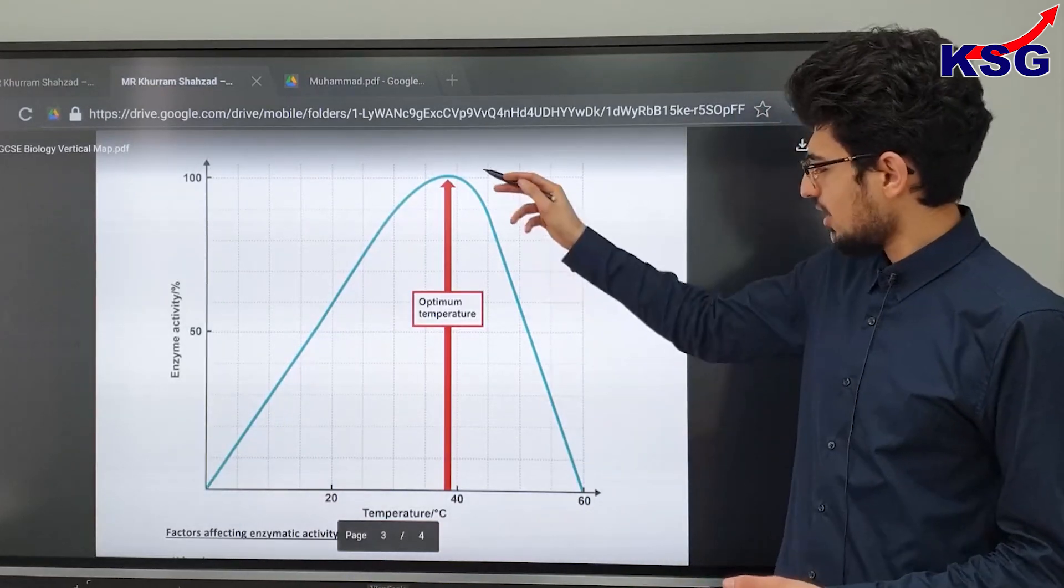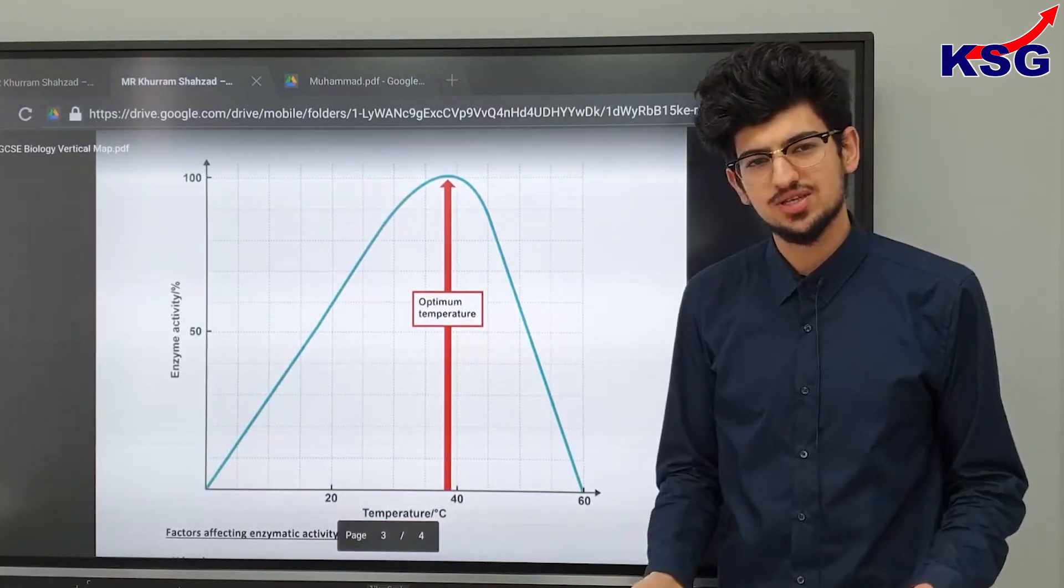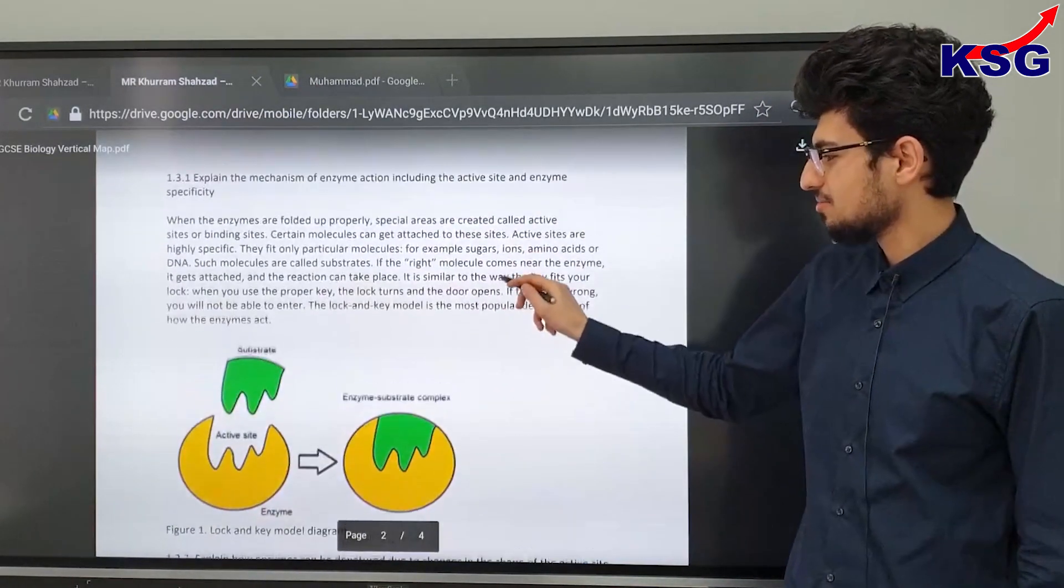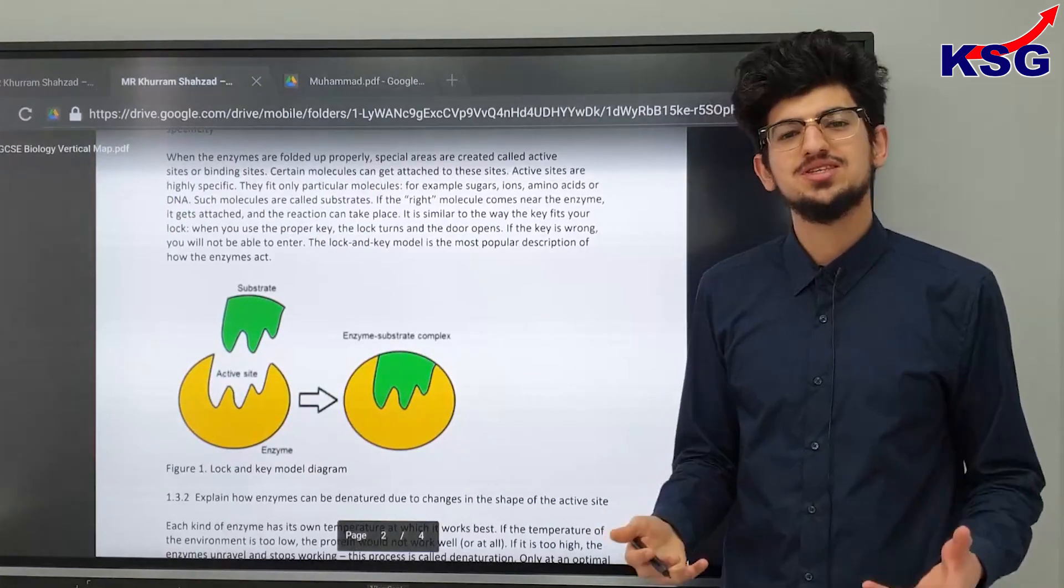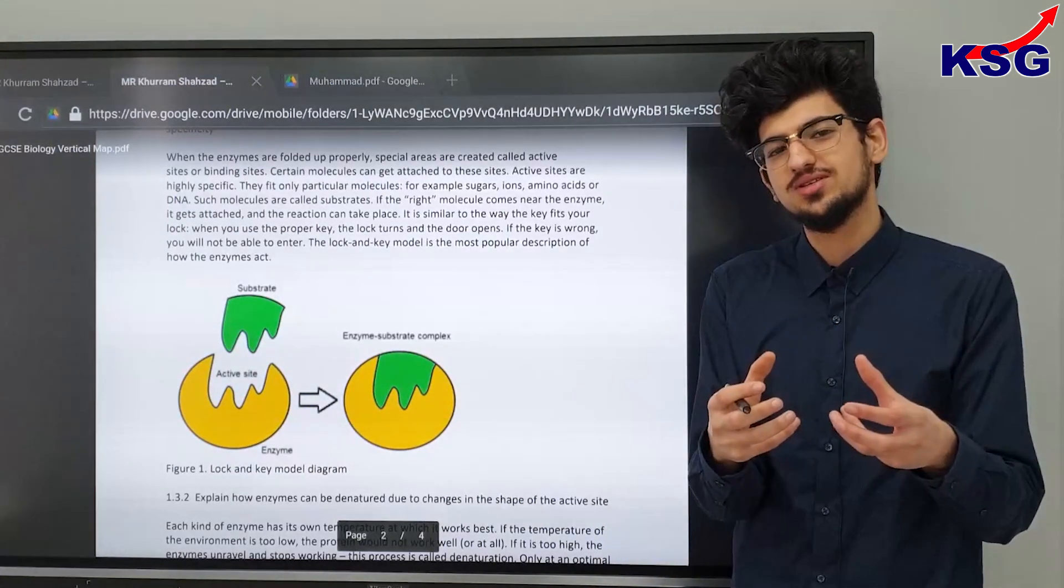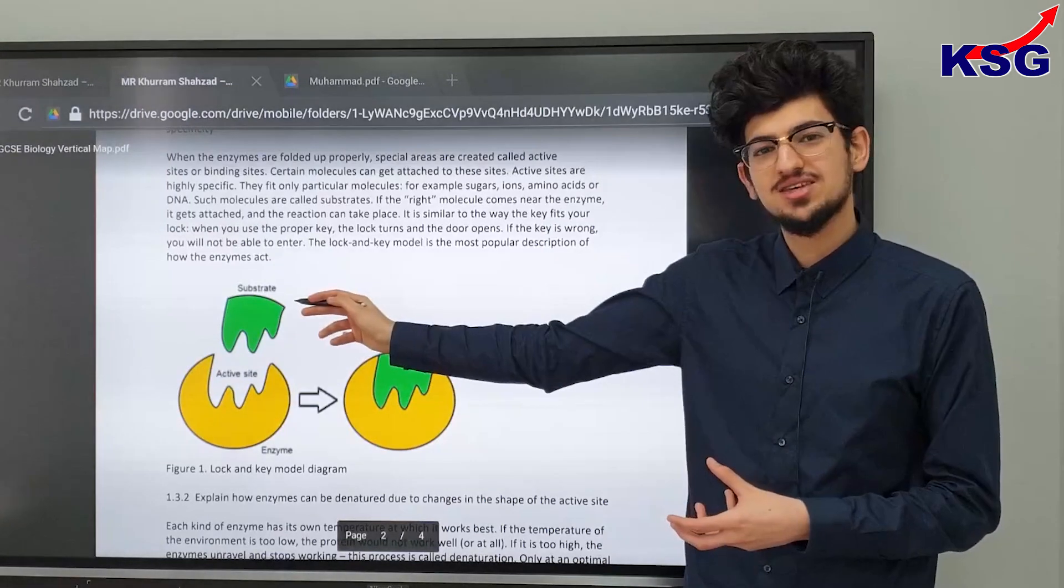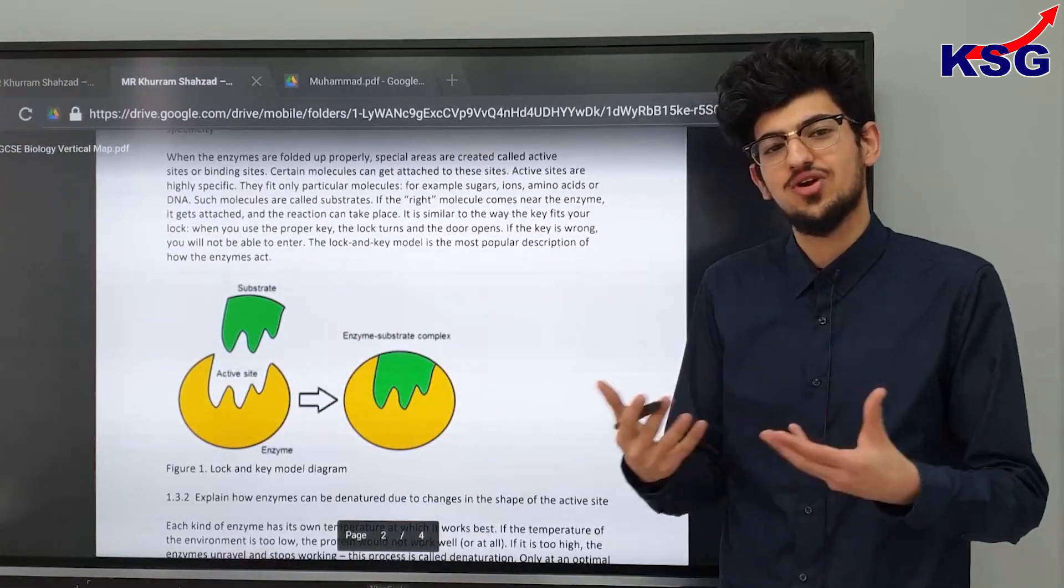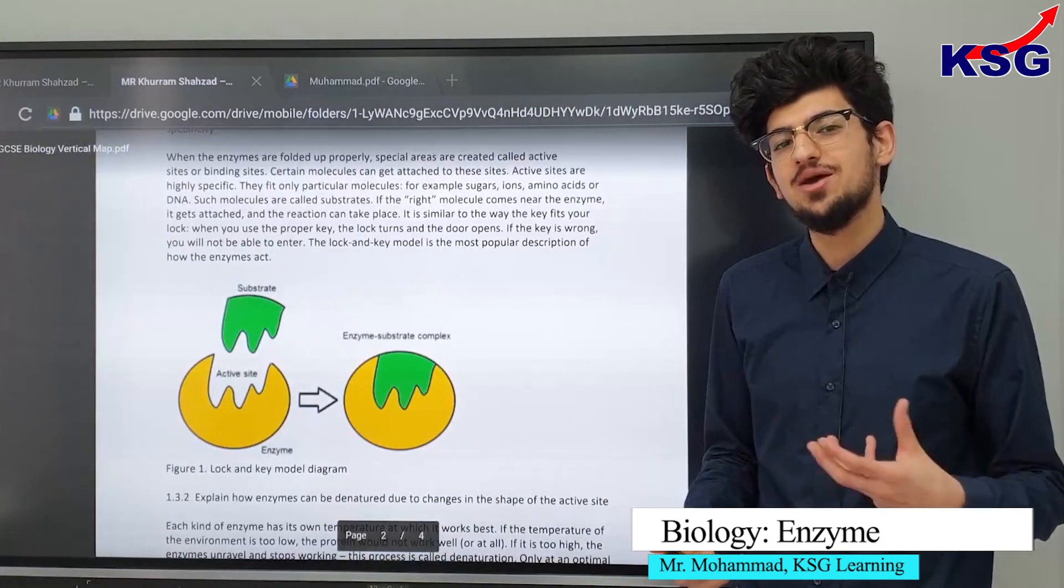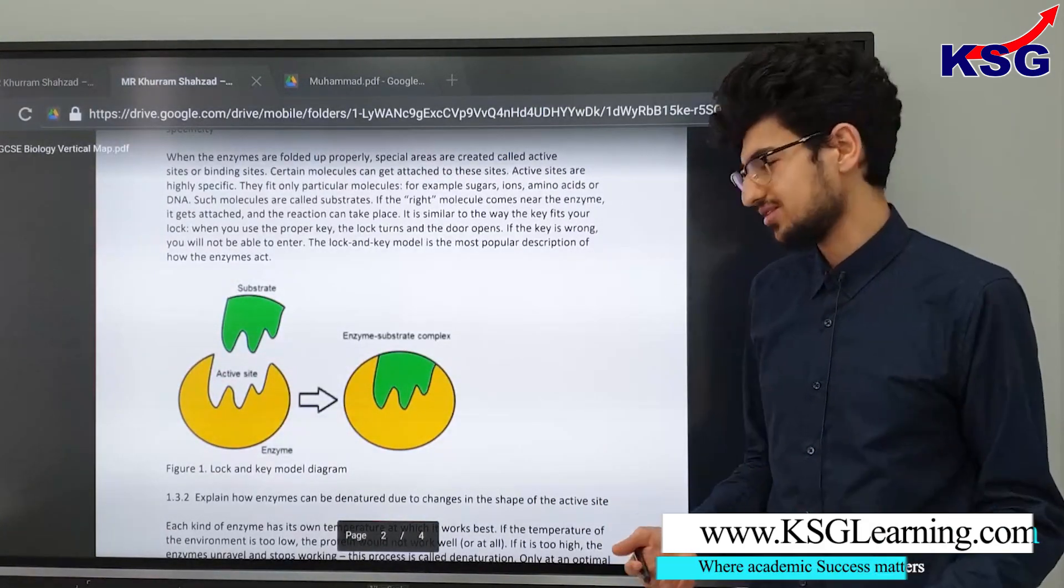Now as we can see it actually starts to decrease after that. Why does that happen? Because if we go back to our enzyme what happens if there's a really high temperature is the shape starts to get distorted and it's no longer fit for the substrate that it increases the rate of reaction for. As a result it's no longer able to increase the rate of reaction for that reactant.